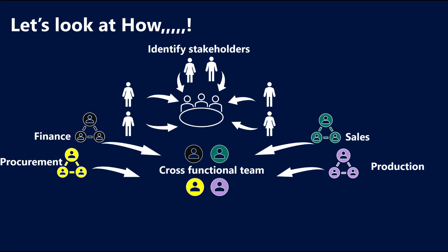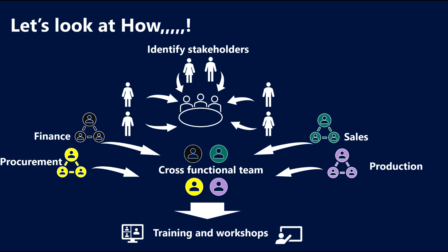Then, establish a cross-functional team. The cross-functional team responsible for overseeing the ERP implementation process could be called process owners, key users, power users, and so on. Actively involve stakeholders in training sessions and change management activities, such as workshops, seminars, and interactive sessions, to ensure they are well prepared and equipped for the ERP system transition.